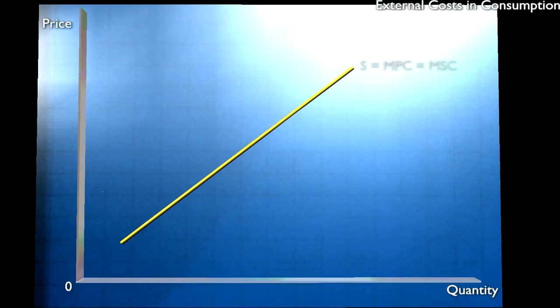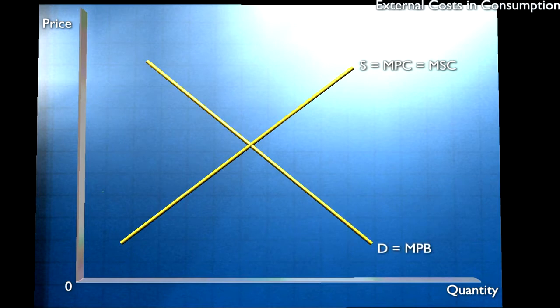But we have our demand curve that reflects the marginal private benefits. But we have a breakdown between private and social benefits.